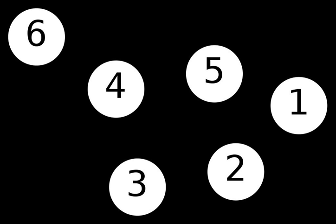A directed graph or digraph is a graph in which edges have orientations. It is written as an ordered pair G comprising